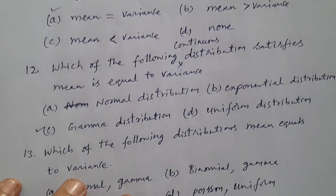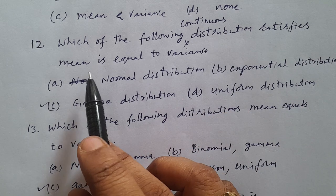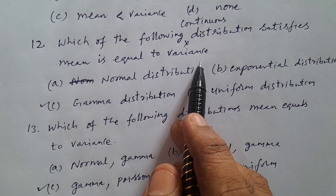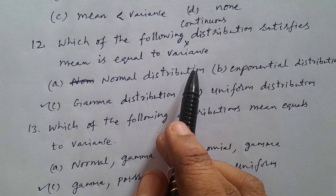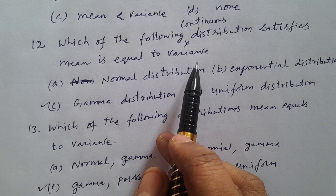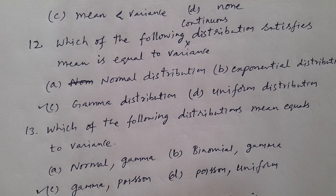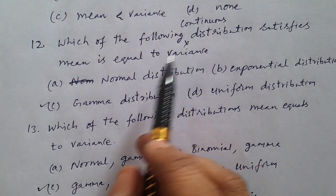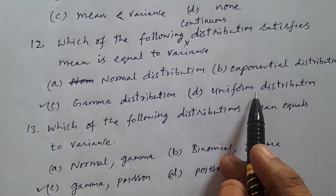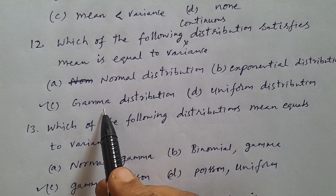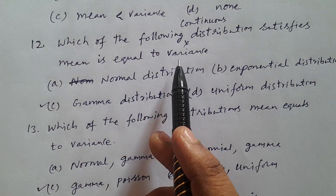Question number 12: Which of the following continuous distributions satisfies mean is equal to variance? Note that a discrete distribution — Poisson distribution — also satisfies mean equal to variance. Among continuous distributions, the options are: Normal, Exponential, Gamma, Uniform. The answer is Gamma distribution (option C), which satisfies mean is equal to variance.